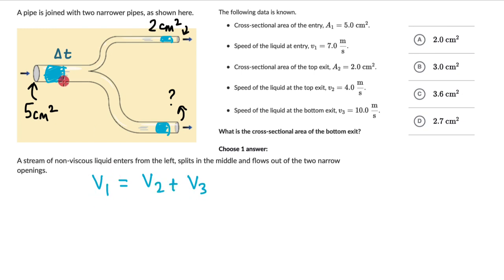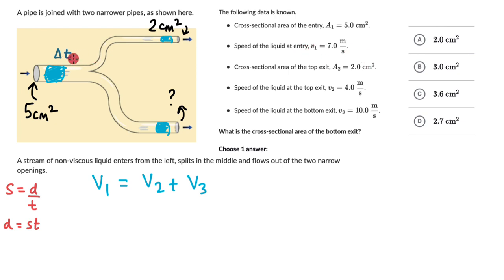Let's think about the volume of water that enters from the left in a time interval delta T. We know speed equals distance over time, so distance equals speed times time. The velocity of water entering from the left is V1, so in time delta T, the length the water travels is V1 times delta T. This is the distance the water travels in that time interval.